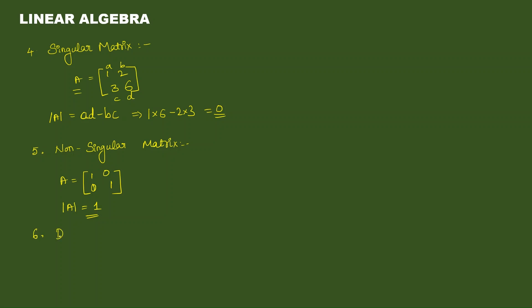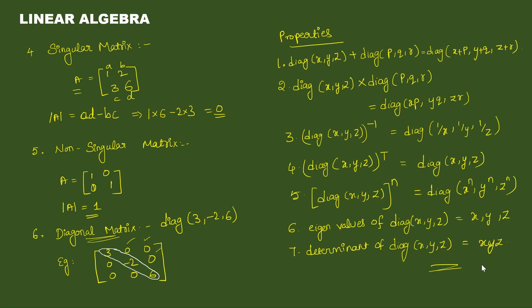Next — diagonal matrix. A square matrix all of whose elements except those in the leading diagonal are zero is called a diagonal matrix. Except diagonal elements, all other elements are zero. For diagonal matrices, addition of two diagonal matrices: directly add the corresponding elements. Same for multiplication — directly multiply the corresponding elements.